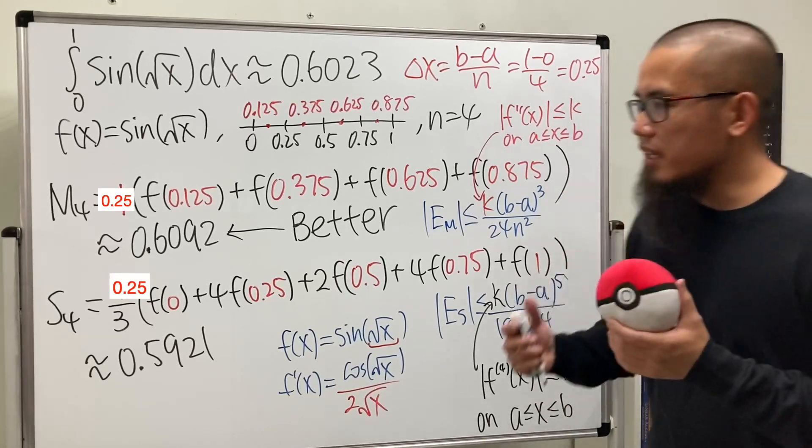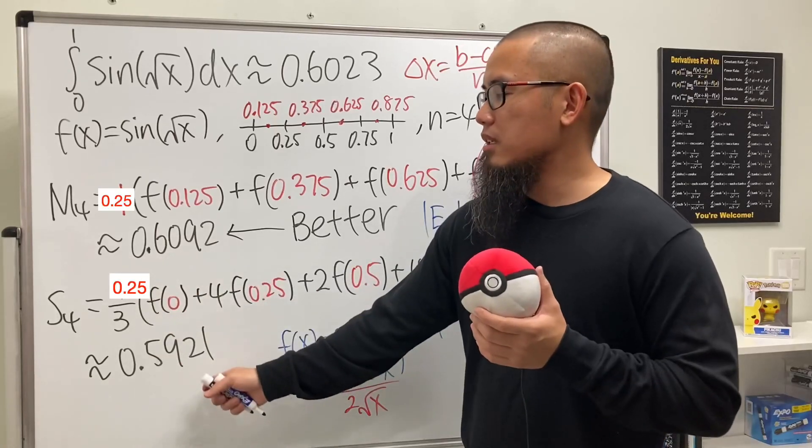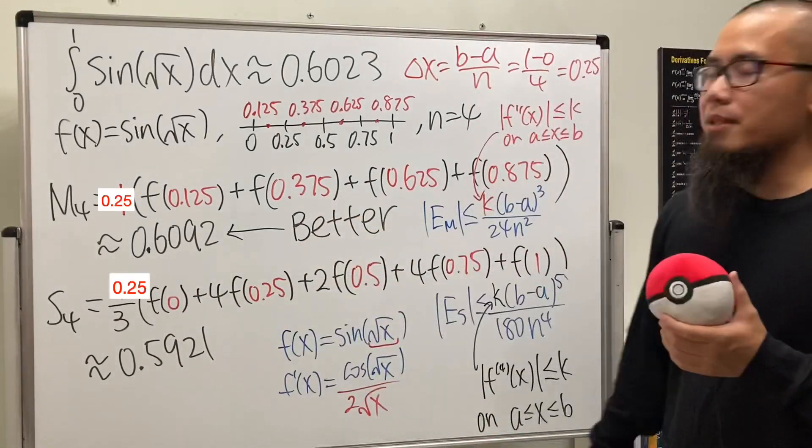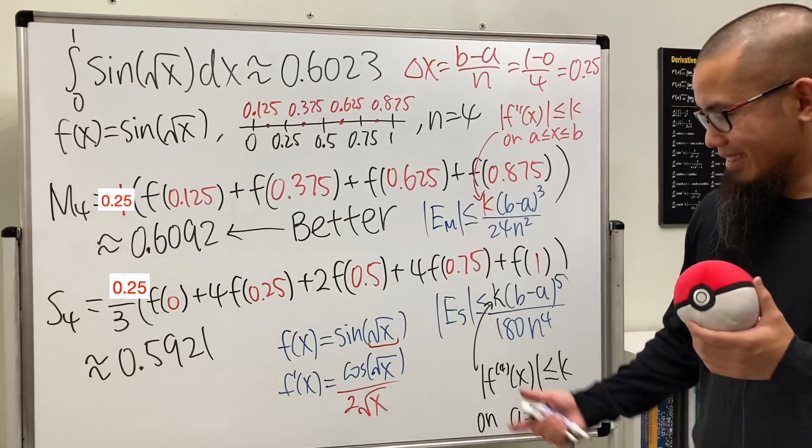That's how we had a chance to have the midpoint rule beat Simpson's rule. And that's exactly what happened. Pretty cool, huh? That's it.